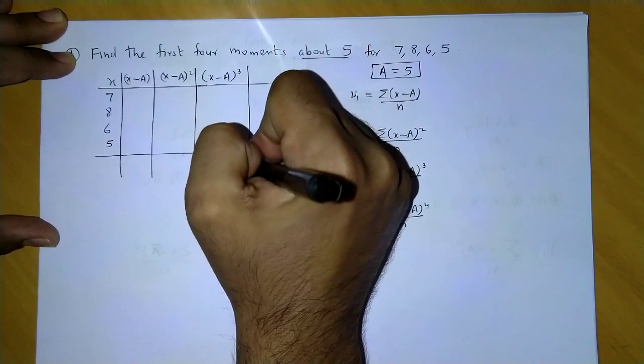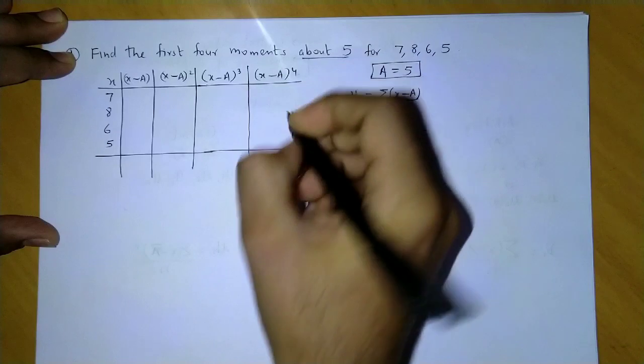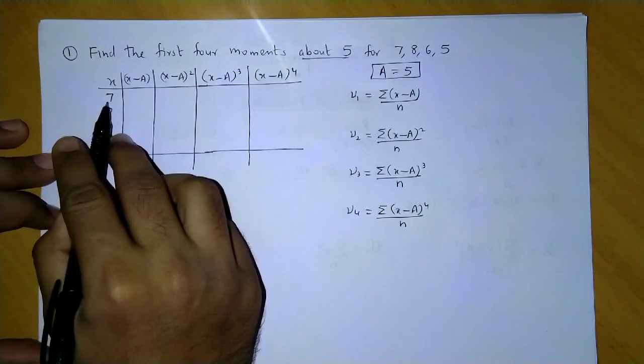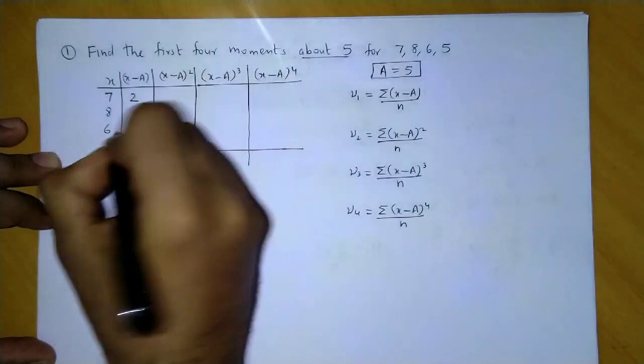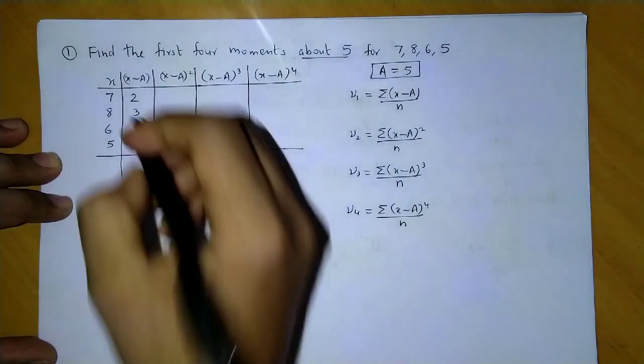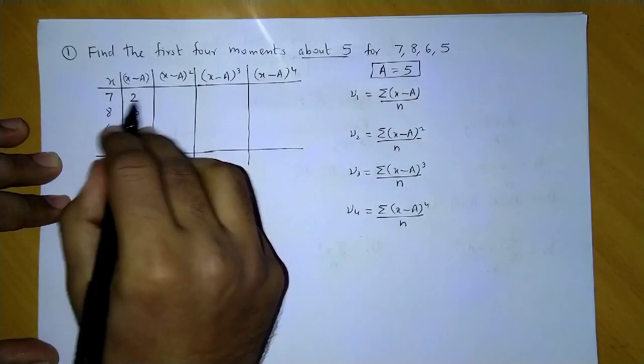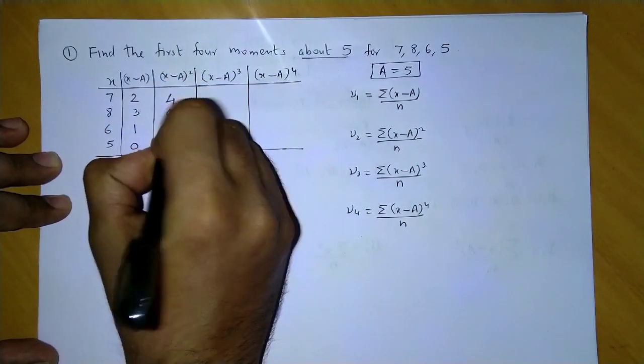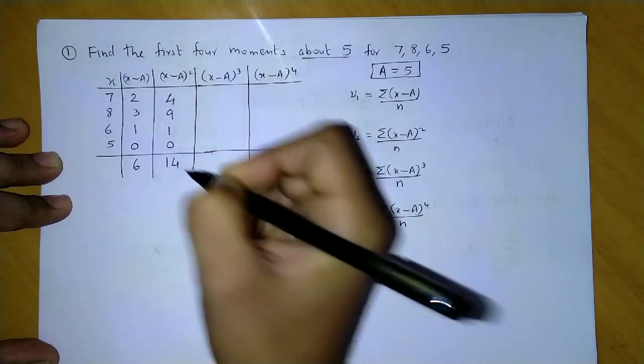So let us subtract: 7 minus 5 gives me 2, 8 minus 5 is 3, 6 minus 5 is 1, 5 minus 5 is 0. Let me add this: 2, 3, 1 becomes 6. Now this is squared, so this would be 4, this would be 9, this would be 1, this would be 0, so this total is 14.